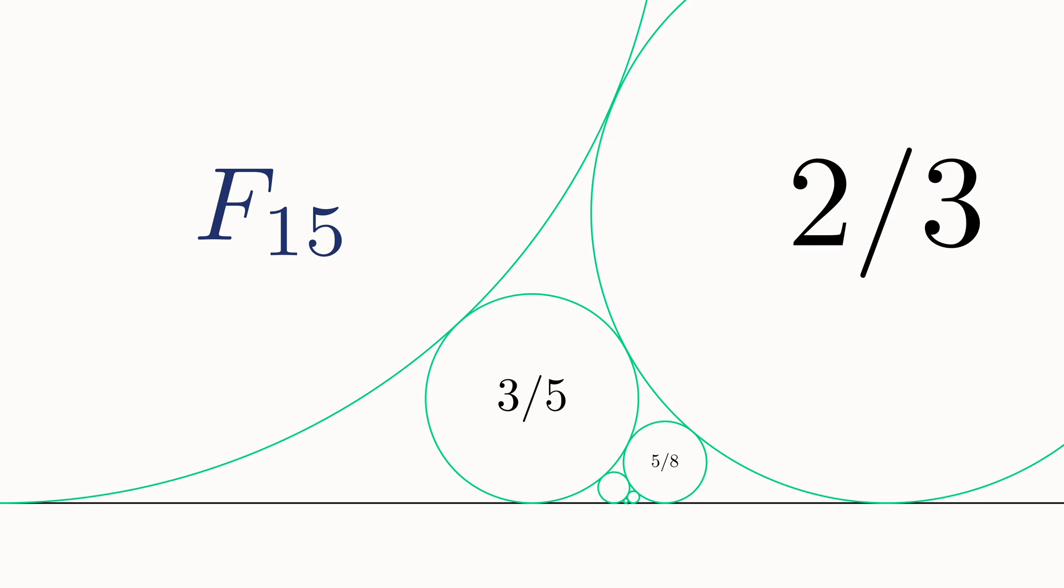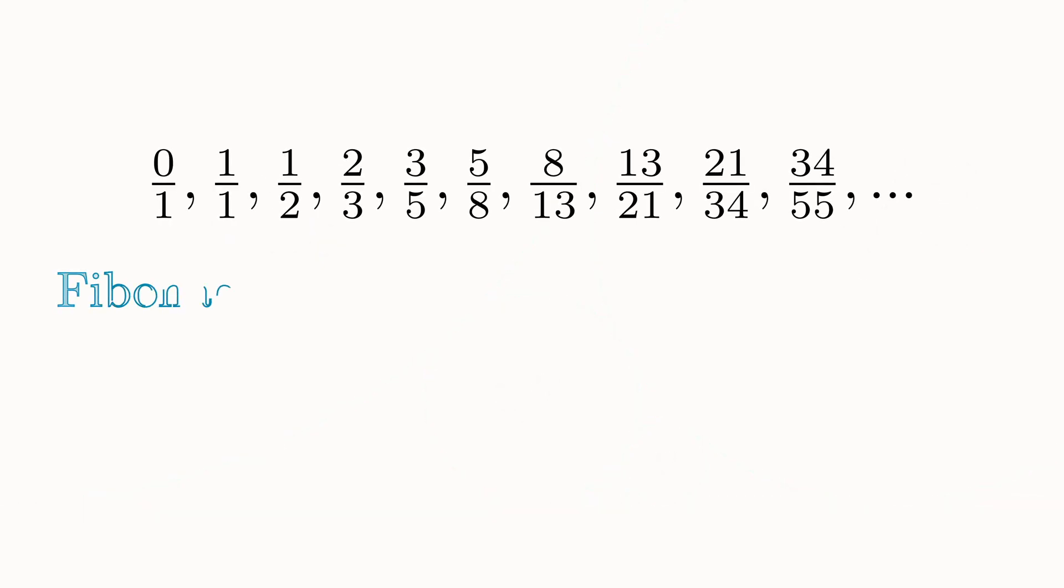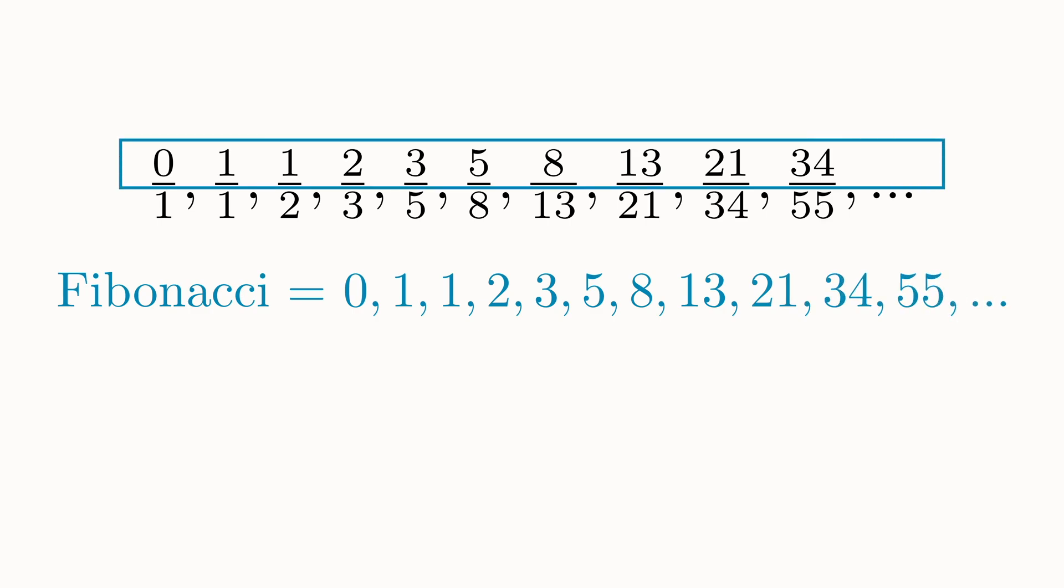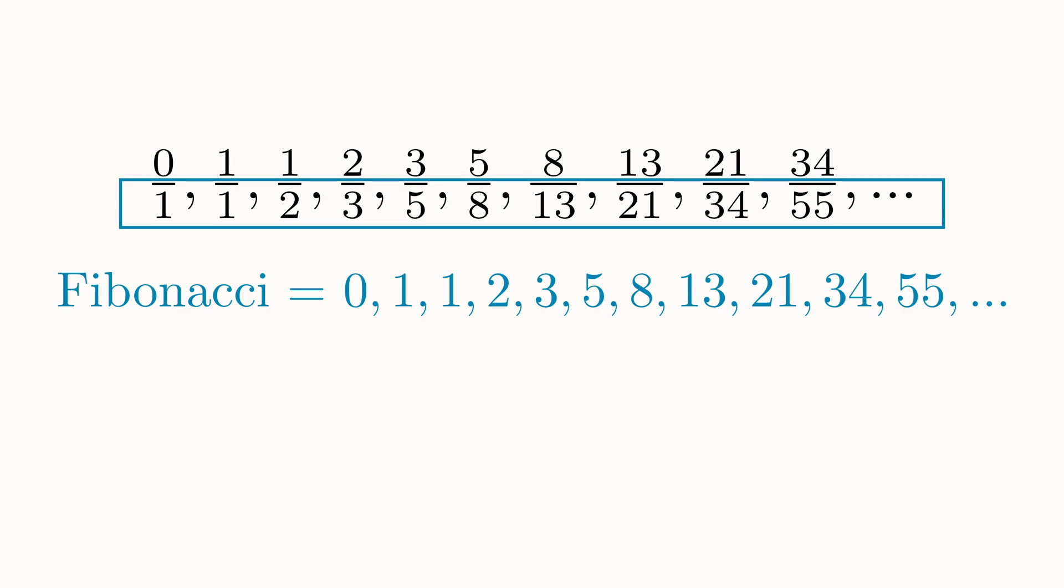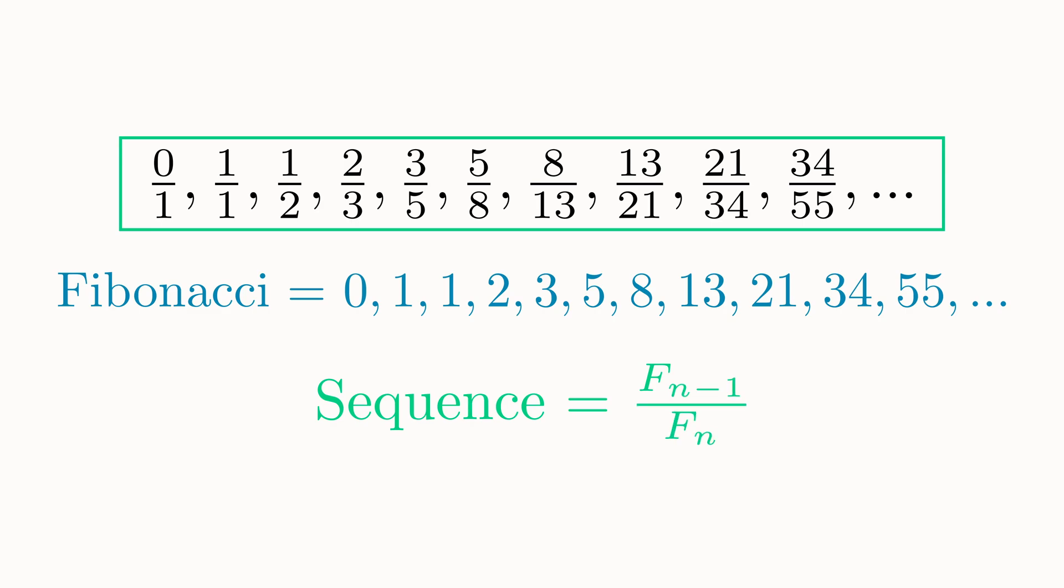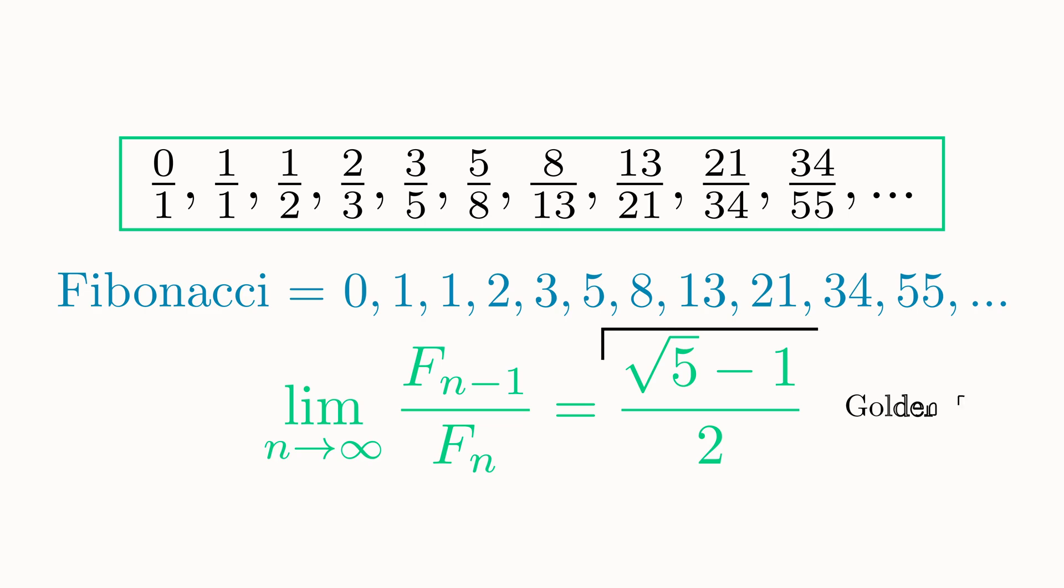And as we do this, a notable pattern appears. The sequence we end up getting on the numerator is the Fibonacci sequence, and we get the same sequence on the denominator, except shifted by one spot to the left. So in terms of the nth term in the Fibonacci sequence, our sequence is given by f sub n minus 1 over f sub n, and it is a well-known result that as n goes to infinity, this sequence converges to the number square root of 5 minus 1 over 2, the famous golden ratio.